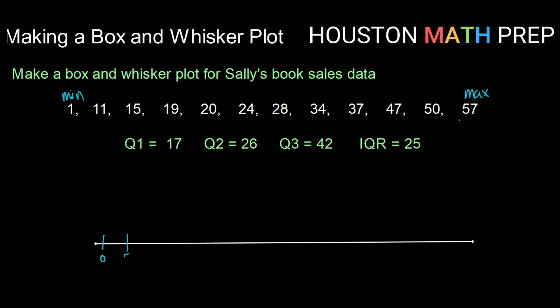So zero, five, 10, 15, and just continue in this way until you get at least up to your max value, if not just a little bit past it. Okay, so I'm going to go up to 60. Now I have a scale that is consistent on my number line that I can start to plot values above.